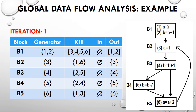In b3, the value b = b + 1 is set, and the statements changing the value of b are 2 and 5, so kill for b3 is {2, 5}. In b4, b = b - 7 is set, and this value is updated by statement 2 in b1 and statement 4 in b3, so kill for b4 is {2, 4}. For b5, it sets a value of a, and the blocks changing the value of a are b1 and b2 in the form of statements 1 and 3, so kill for b5 is {1, 3}.